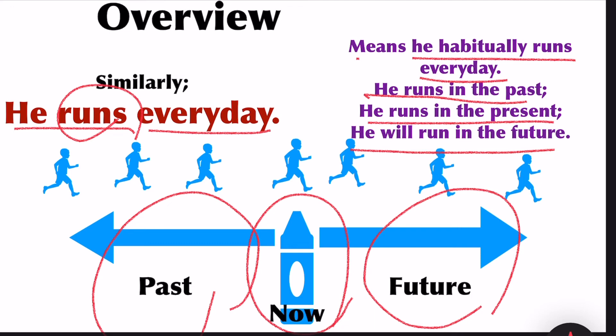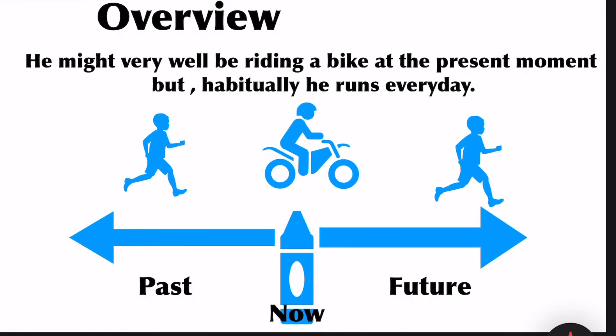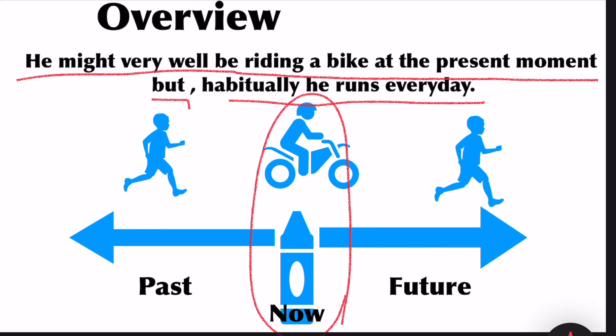To express a true statement or a habitual action, you have to use simple present tense. He might very well be riding a bike at the present moment, but habitually he runs every day. Even at the time you are talking now he might be riding a bike, but his habit is he runs every day.